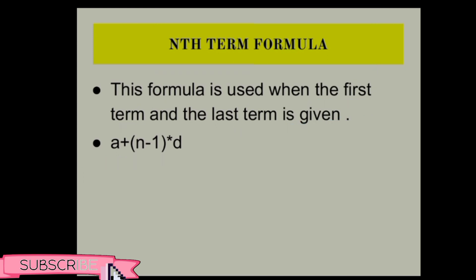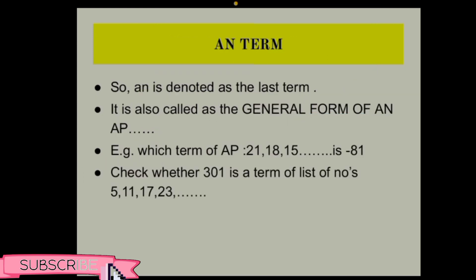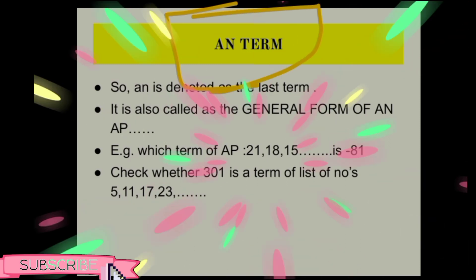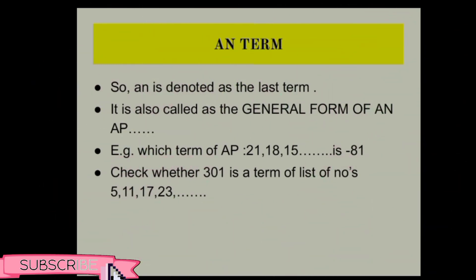Now a_n terms: what is a_n terms? It's not given in the chapter but I'm explaining it. It is written as 'a' with subscript 'n' at the bottom of 'a'.